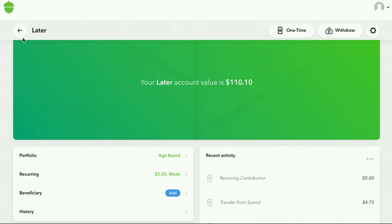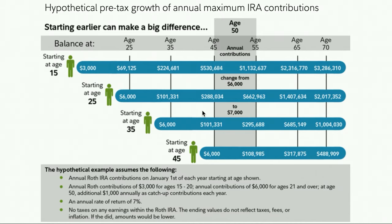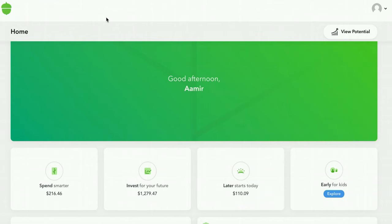Just a quick edit: in case you thought I was exaggerating about the two million — if you invest $6,000 a year starting at 25, by the time you're 65 you'll have $1.4 million, all yours, no tax. You take it out and keep it. I'll talk about that in a future video, but feel free to pause and take a closer look at that graphic.